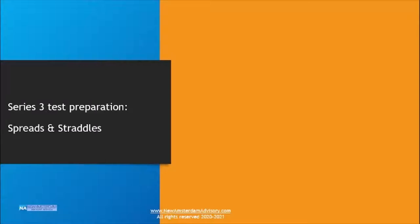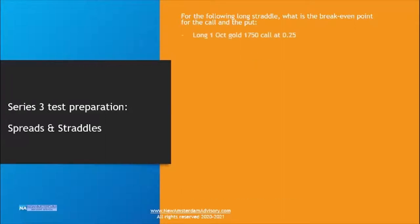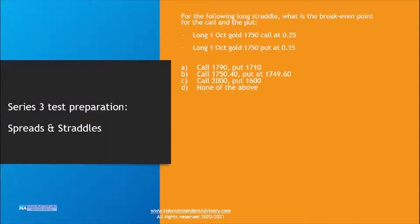Here's another test question for Series 3 prep in the area of spreads and straddles, focusing on a long straddle. The question could be: for the following long straddle, what is the break-even point for the call and the put? We have long October gold at 1750 — long both the put and the call at different premiums. A straddle is long or short a put and a call of the same underlying commodity and the same strike price — in this case, long a gold 1750 call and a gold 1750 put.